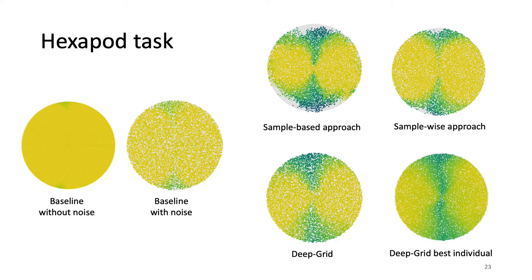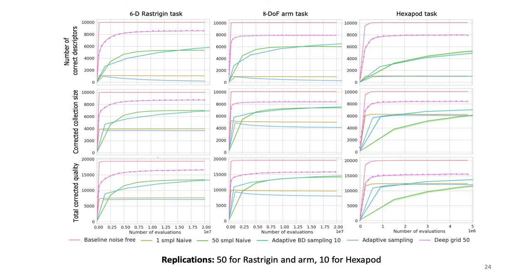Here is the quantitative comparison of all approaches. On each graph, the baseline without any noise is in red and deep grid is in pink. We compare on three tasks — including the Rastrigin task as a traditional optimization task — according to three metrics: the number of correct descriptors (how many descriptors are well evaluated), the corrected collection size (quantifying the true diversity of the final archive, inspired by traditional QD diversity metrics), and the total corrected quality (equivalent to the QD score, corresponding to the sum of fitness across all cells). Across all metrics and tasks, deep grid performs better than all other algorithms.